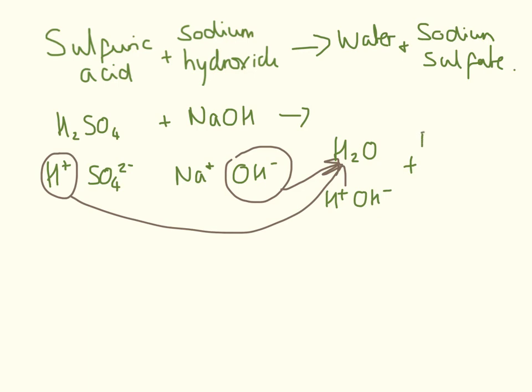And then once we've taken those two out of the equation, we can just make sodium sulfate with what's left over. So we have Na plus and SO4 2 minus. But because this is a 2 minus here, we need to have two positive charges to cancel it out. So we need to put another Na plus there, so it actually becomes Na2SO4.